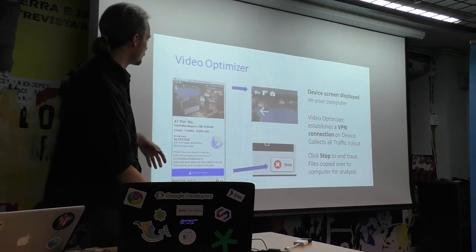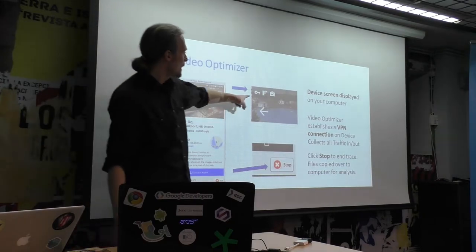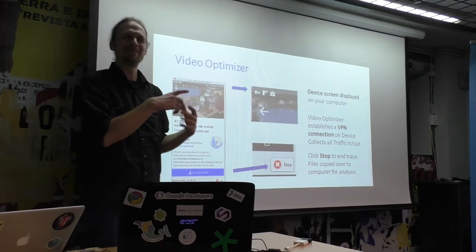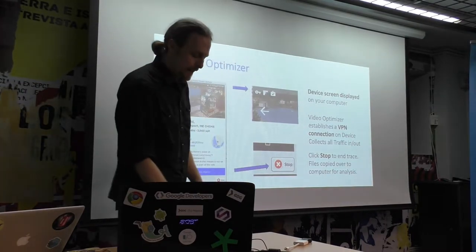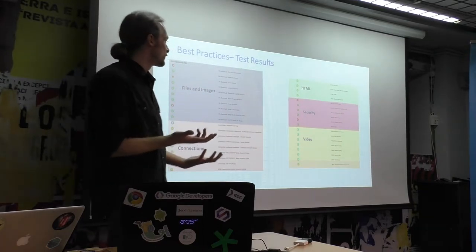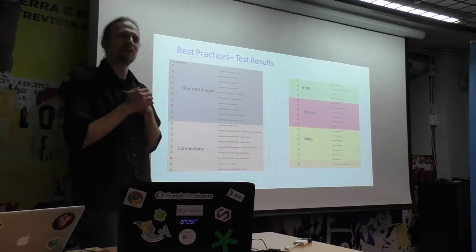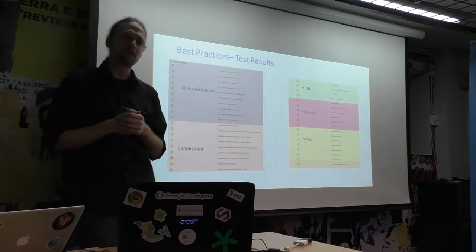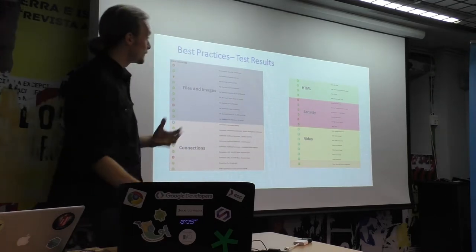While it's running, a VPN gets set up on your phone, and when there's a VPN we set up a man-in-the-middle and collect all the packets. When you're done and hit stop, instead of opening Wireshark or other network analysis tools, we grade it. We try to give you 40 best practices — red Xs are bad, green check marks are good — to make it really easy to figure out where you can improve your mobile application for performance issues.